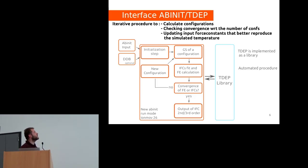The idea here is an automated process where the user just has an input file and maybe a DDB file to start the calculation. There is an initialization process where I calculate the first configurations, then ABINIT calculates the ground state of these configurations and extracts force constants. When it extracts force constants, it can calculate the free energy.